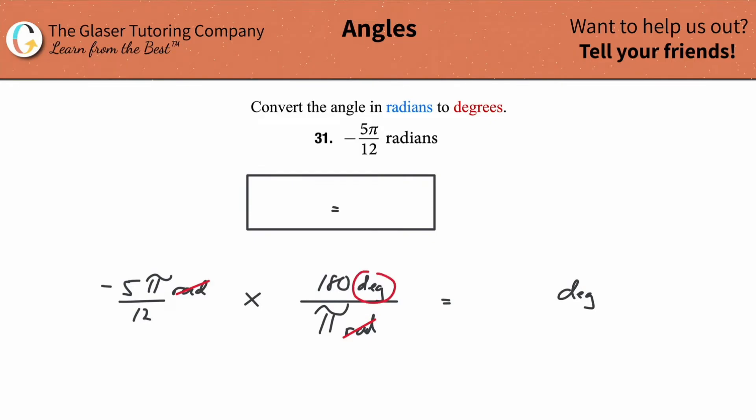Notice the degrees will not cancel. And the unit in your answer will be in terms of degrees. The problem is basically finished. All you have to now do is just simplify some stuff. Notice the pies will cancel as well.